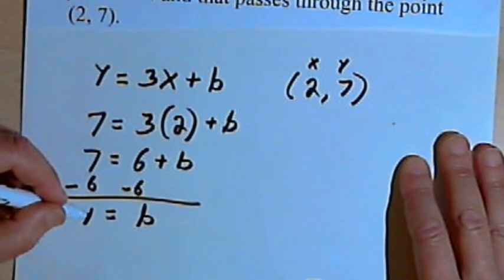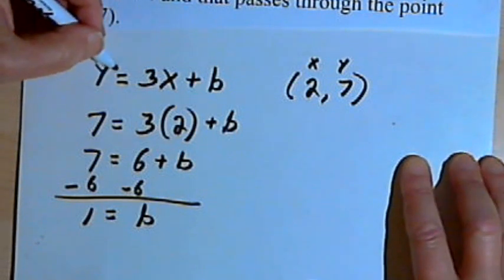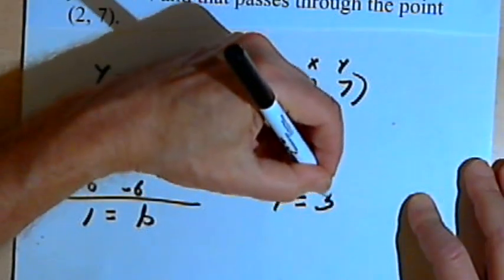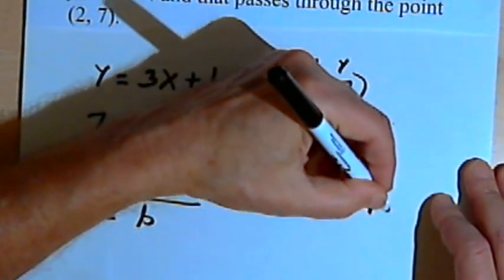So now I can write my equation. Instead of y equals 3x plus b, I'll just write y equals 3x plus 1.